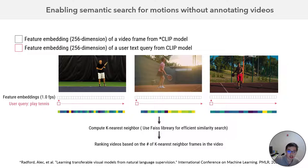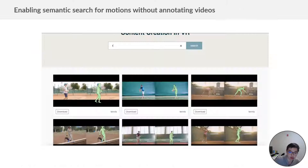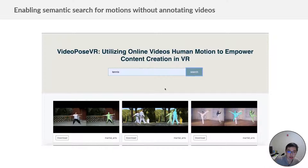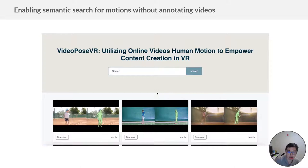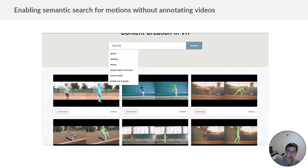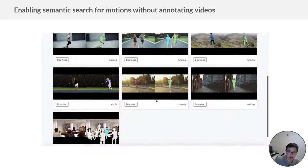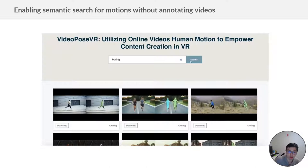We rank each video based on the number of K nearest neighbor frames in the video. The yellowish color blocks represent higher similarity scores. The two tennis videos on the left have much higher scores than the basketball video on the right. One thing to highlight is that all of this does not require any manual annotation — users just need to download and make a query to search for the motion they want. For example, if the user searches "tennis" in our motion dataset, the system retrieves videos and motions with tennis motions. Another example: searching "running" retrieves those running videos with their motions.